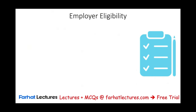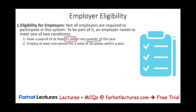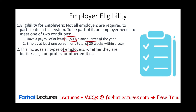Which employers should participate in this program? Not all employers. To be part of the system, an employer needs to meet one of two conditions: they have a payroll of at least $1,500 in any quarter — we have four quarters in a year — or they employ at least one person for a total of 20 weeks within a year. This includes all types of employers, whether they are business, non-profit, or other entities.